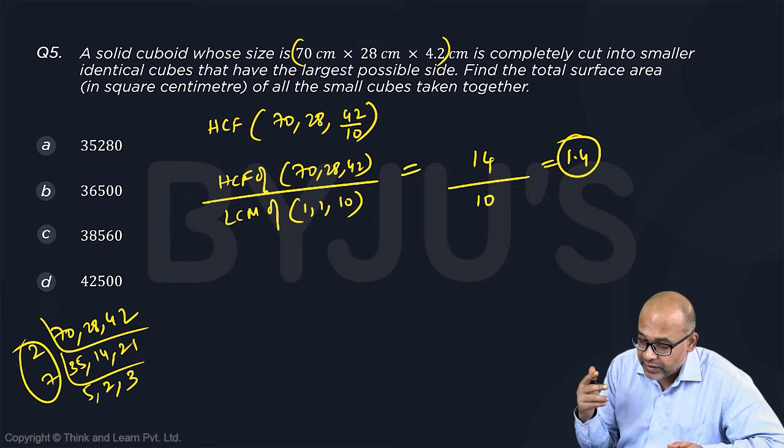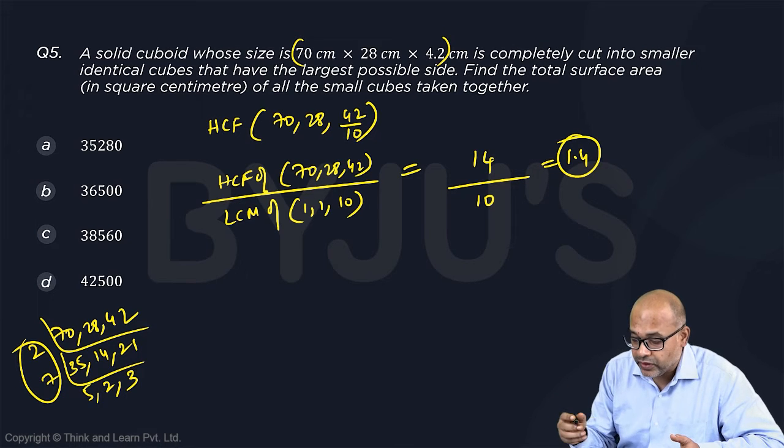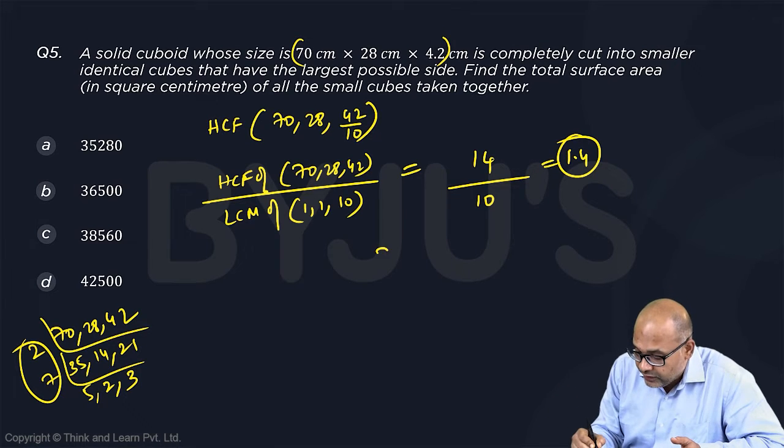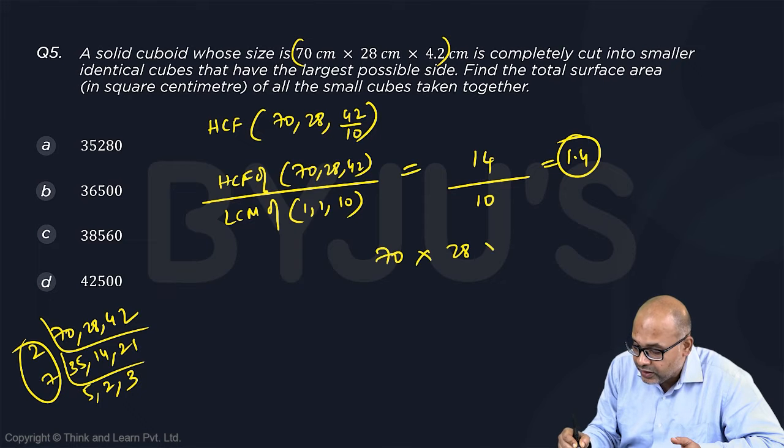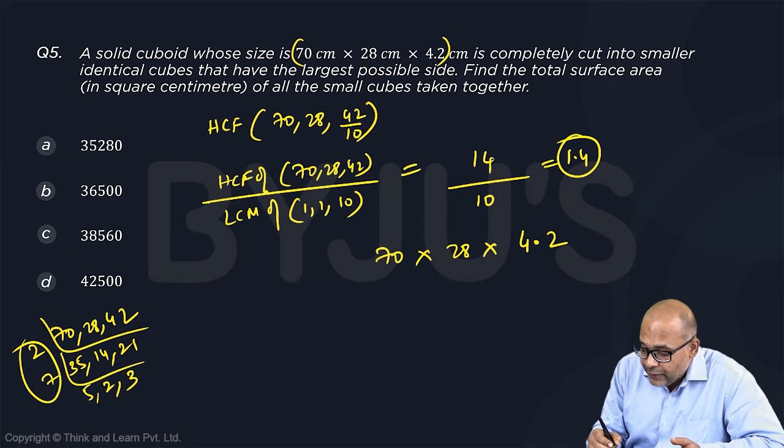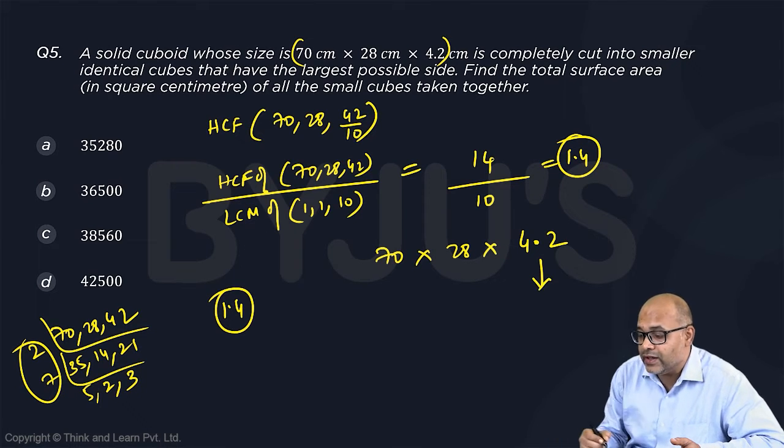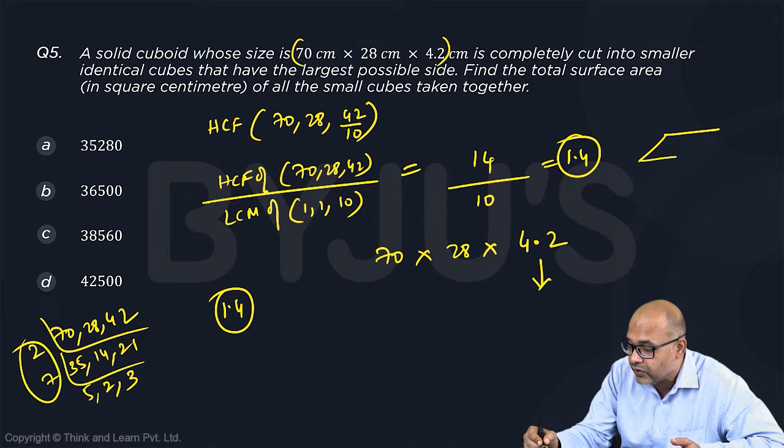Now it means we need to find out what will happen if I take out, if I keep the size as 1.4. So 70 into 28 into 4.2, if I take 1.4 as a size, then along this. So if you notice, the cuboid will be in this form.